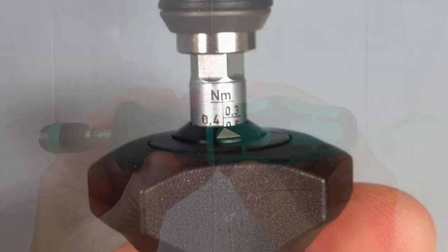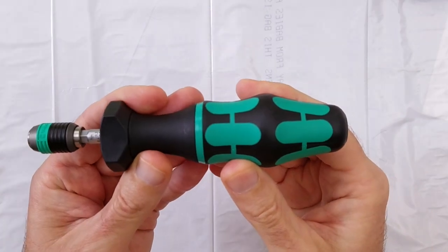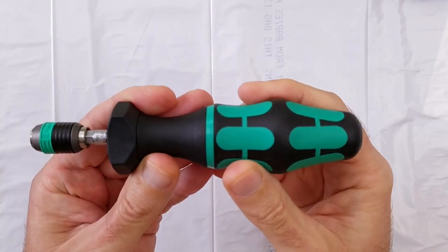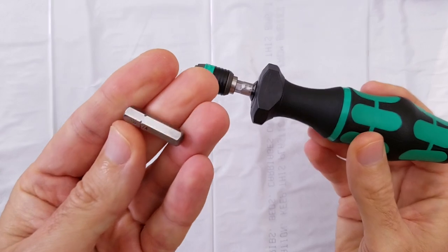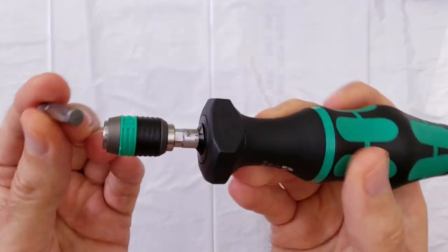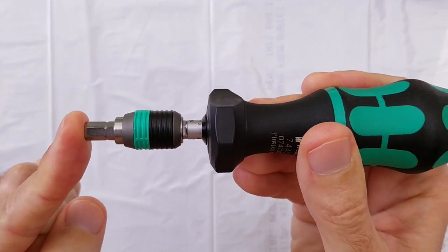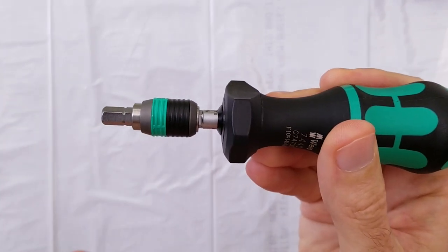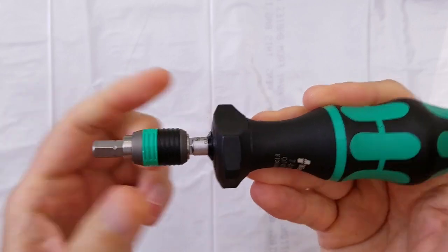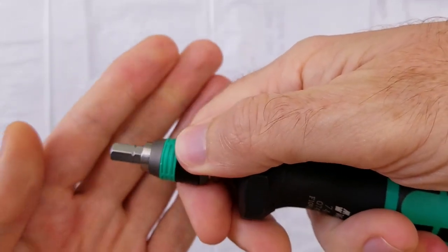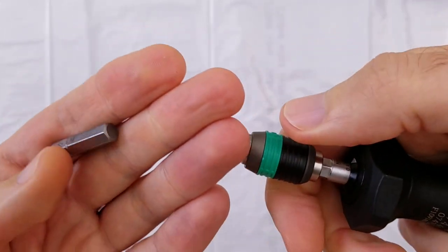Let me simulate actual use of the torque screwdriver and what happens when the torque value is reached. Here I have just a quarter inch hex bit. To insert the bit, you slide it in and apply pressure, and then this collar will click back. To remove the bit, you just push forward on the collar and the bit comes out.